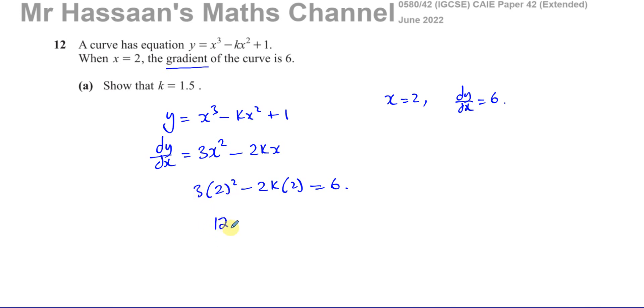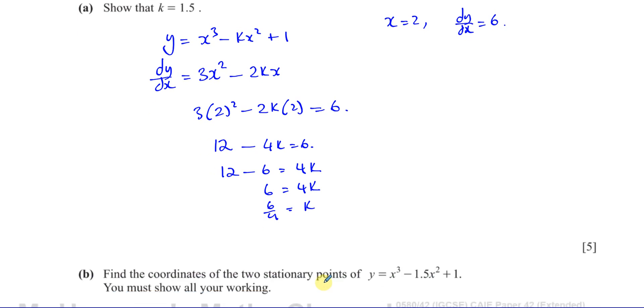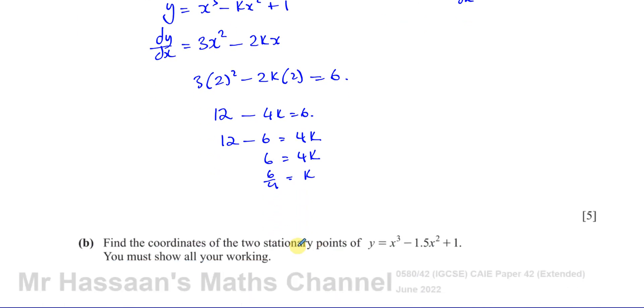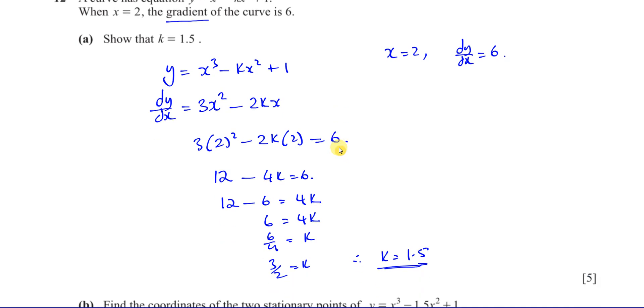That's 3 times 4 which is 12 minus 4k equals 6. So if I subtract 6 from both sides and I add 4k to both sides, I end up with 6 equals 4k. So divide both sides by 4, so 6 over 4 equals k. And that means that k is equal to 3 over 2, or k equals 1.5. So there's the answer of part A.